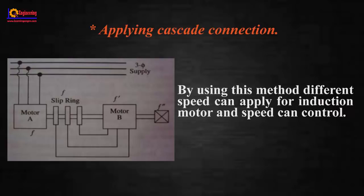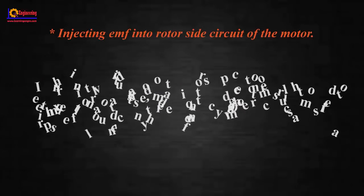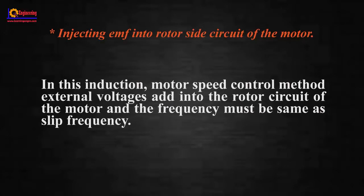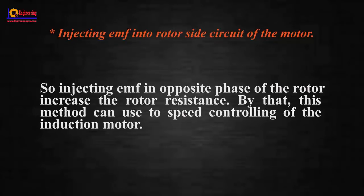Injecting EMF into rotor side circuit: in this speed control method, external voltage is added into the rotor circuit of the motor and the frequency must be same as slip frequency. Injecting EMF in opposite phase of the rotor increases the rotor resistance. By that, this method can be used for speed controlling of the induction motor.